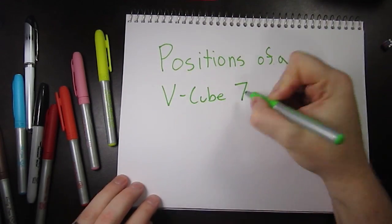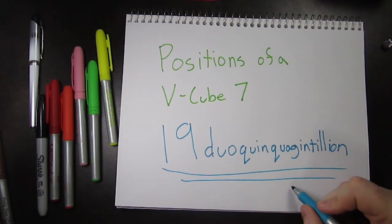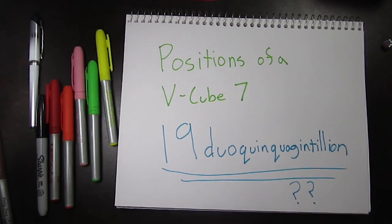The 7x7 has 19 duo-quinquagintillion possible positions or permutations. So, what does 19 duo-quinquagintillion atoms look like?